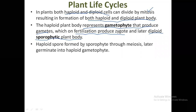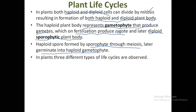The haploid spores formed by the sporophyte through meiosis later germinate into haploid gametophytes. The sporophytic plant body, which is diploid, will start to divide through meiosis, forming spores. When these spores germinate, the haploid gametophytic stage develops. Based on this haploid and diploid condition, there are three different kinds of life cycles observed in plants.